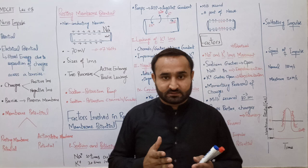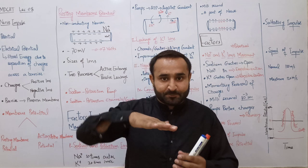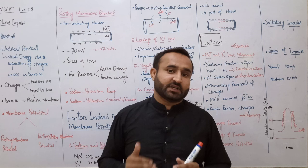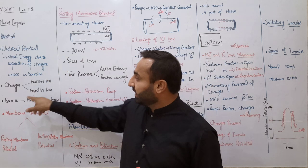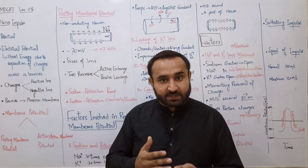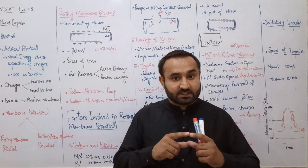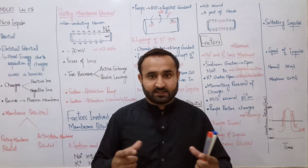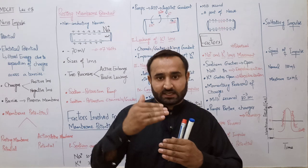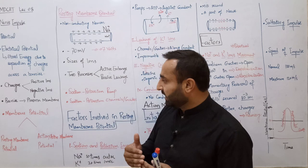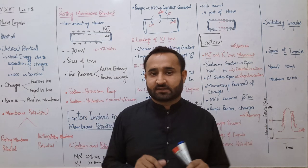Electrical potential basically stored energy due to separation of charges across a barrier ہے۔ جیسے UPS ہوتا ہے جو electricity کو store کر لیتا ہے - barriers کے اکراس electric charges separated ہوتے ہیں۔ ہمارے topic میں charges کیا ہیں؟ Positive اور negative ions - sodium ions، potassium ions اور دوسرے organic ions۔ Barrier کیا ہے؟ Plasma membrane of the nerve cell۔ Membrane کے outer اور inner region میں ion separation ہوگی۔ Potential or electric potential across a membrane is called membrane potential۔